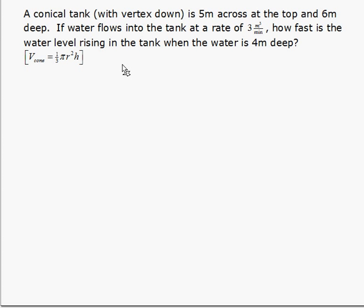The following question is a related rate question about water rising inside a conical tank. A conical tank with vertex down — so an inverted cone — is 5 meters across at the top and 6 meters deep. If water flows into the tank at a rate of 3 cubic meters per minute, how fast is the water level rising when the water is 4 meters deep? We're given the volume of a cone.